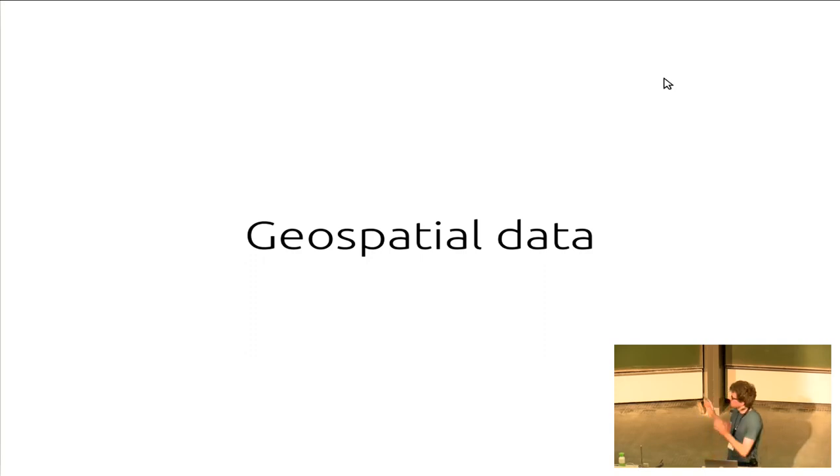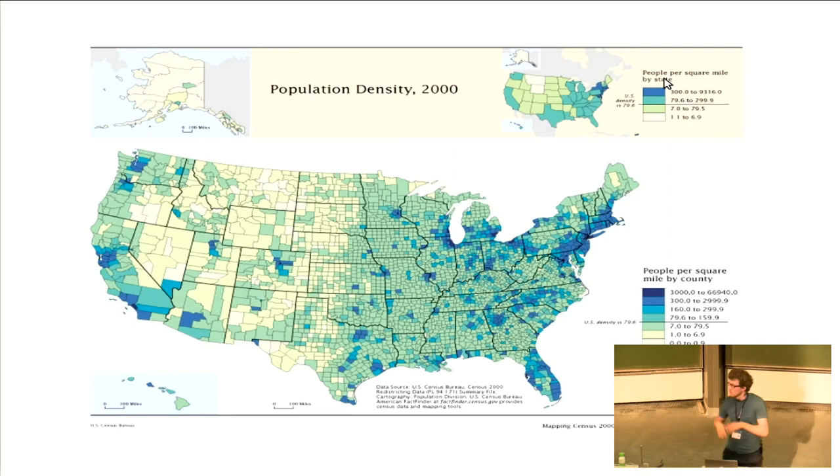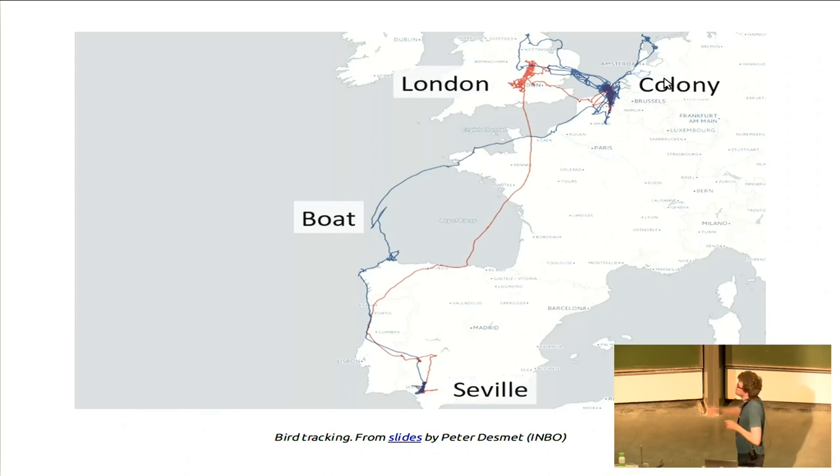As an introduction, to give you a few examples. Many governmental data on statistics, on population density, poverty, and things like that are all geospatial data. Another example, biodiversity data. Here, the picture shows some bird tracking experiments where they specifically tracked a single or a few birds. But also, biodiversity observations from volunteers that just record their observations, a typical example of geospatial data.